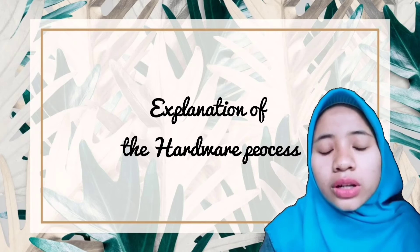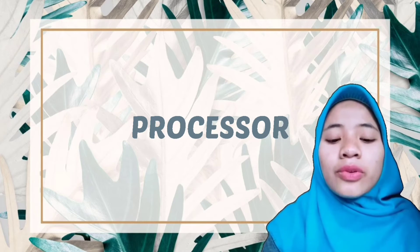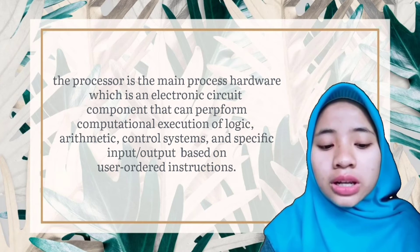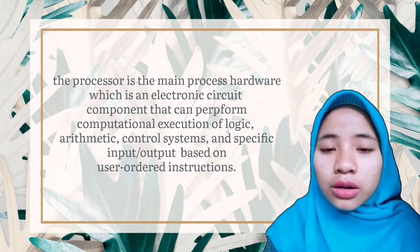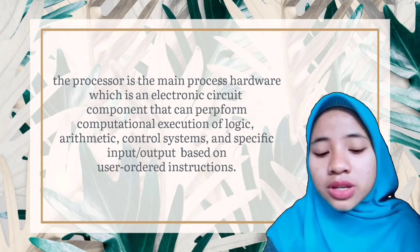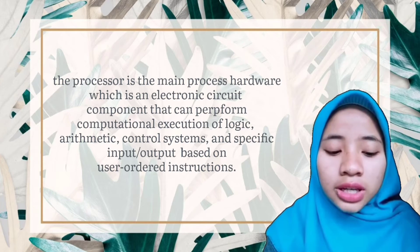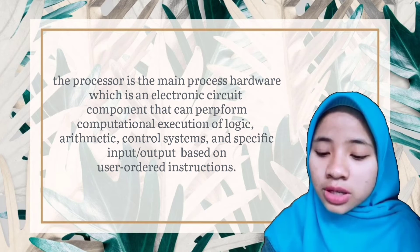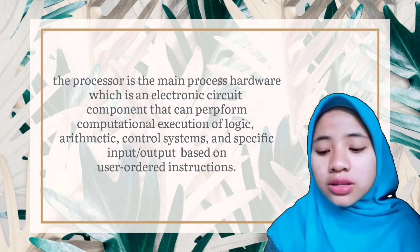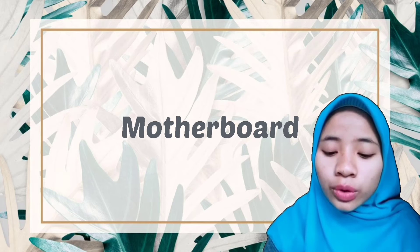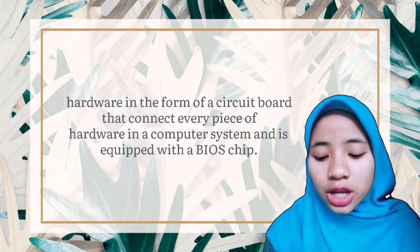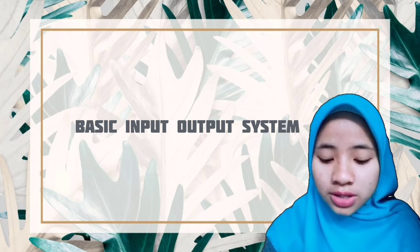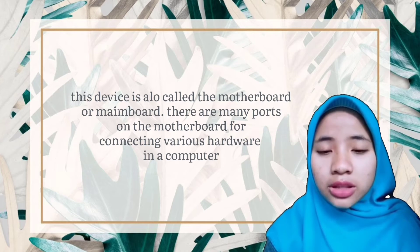Thanks, Sintana Faridah. I will explain about the processor. The processor is the main process hardware, which is an electronic circuit component that can perform computational execution of logic, arithmetic, control systems, and specific input or output based on user instructions. Almost all processes in a computer system are carried out by the processor, also known as the CPU — Central Processing Unit. The motherboard is hardware in the form of a circuit board that combines every piece of hardware in a computer system. The computer system is equipped with a BIOS chip — basic input-output system. This device is also called the motherboard or main board.